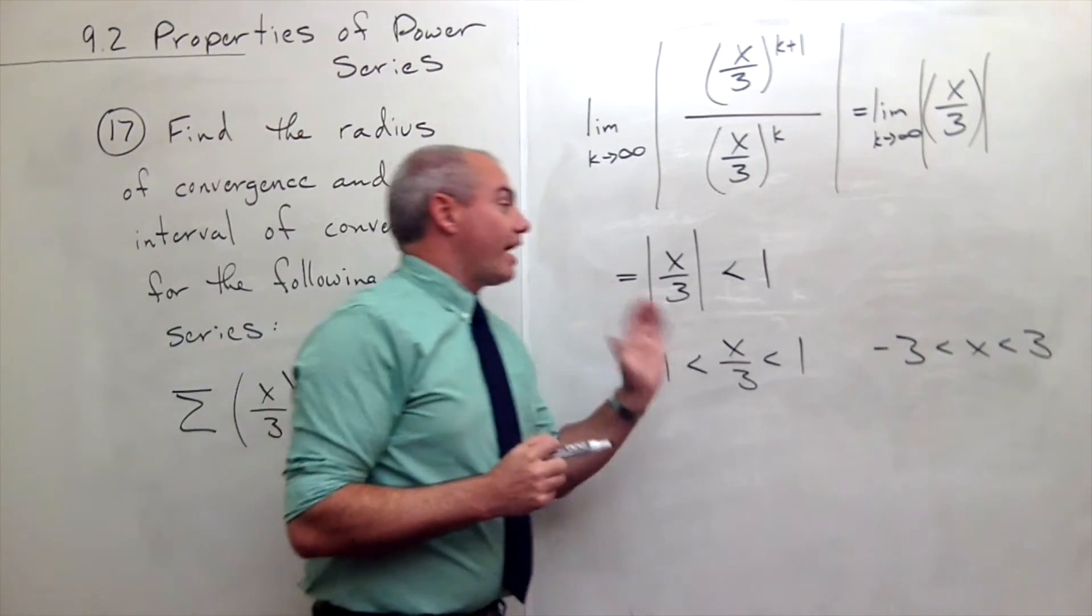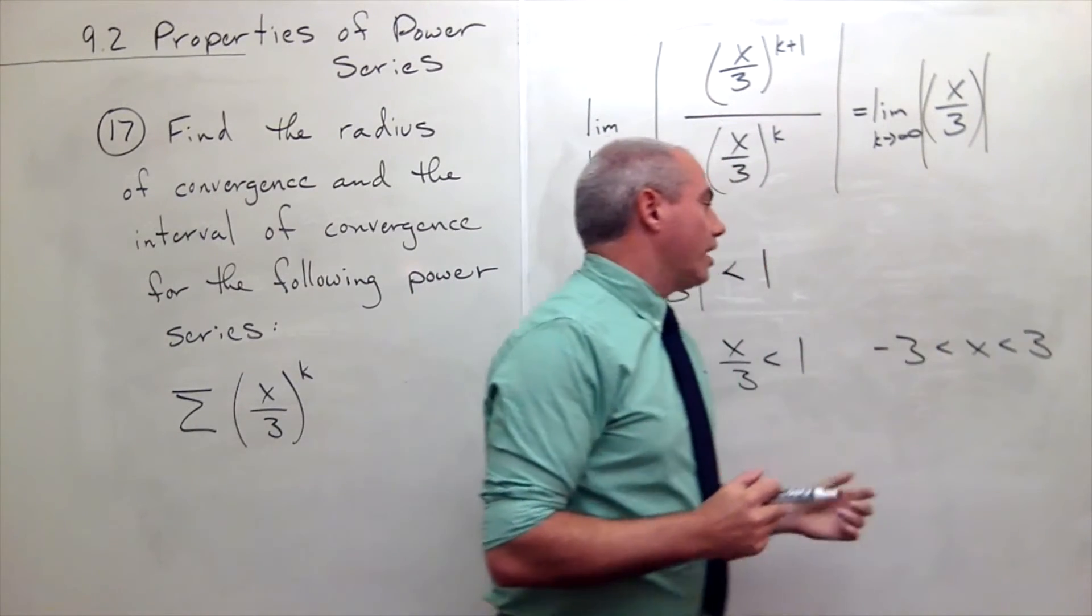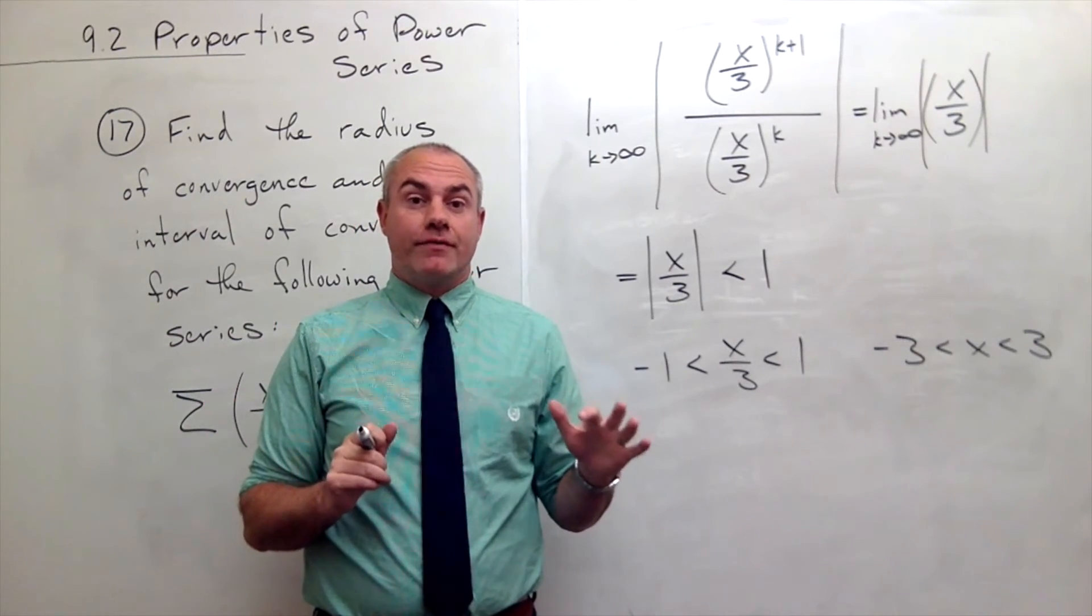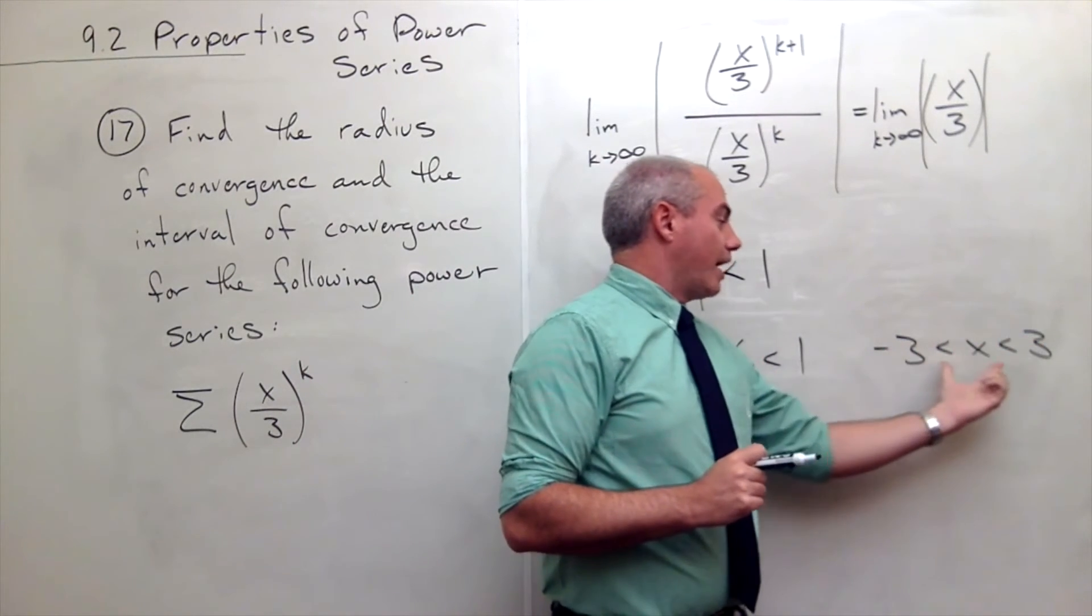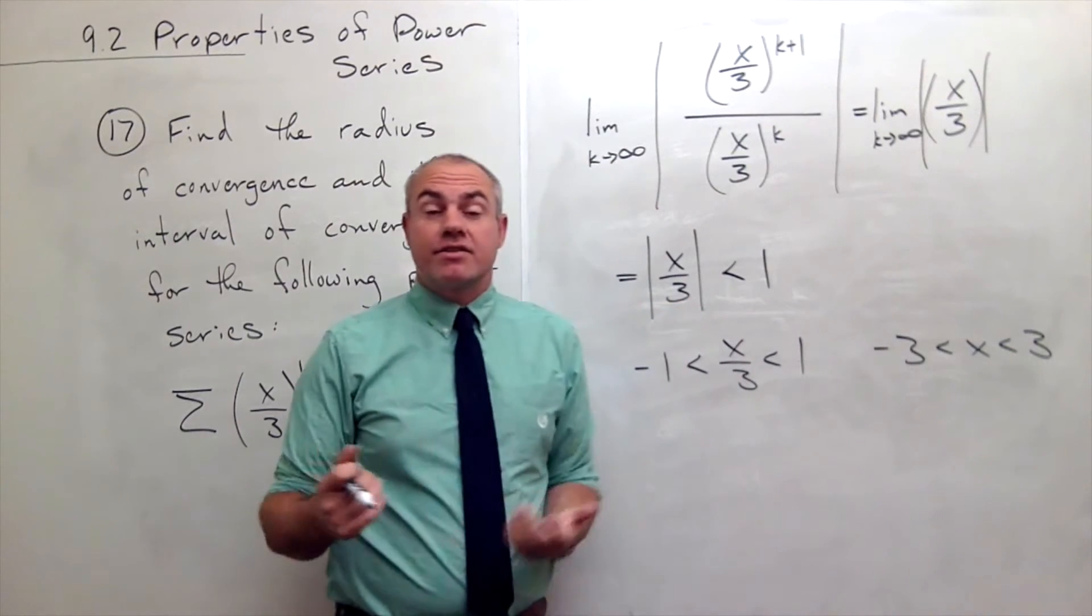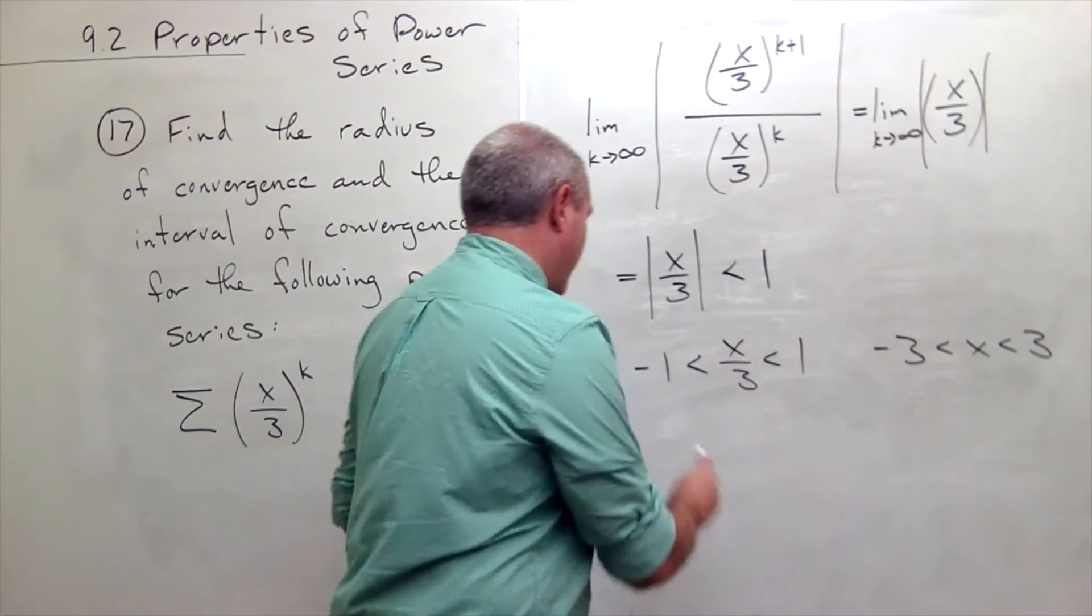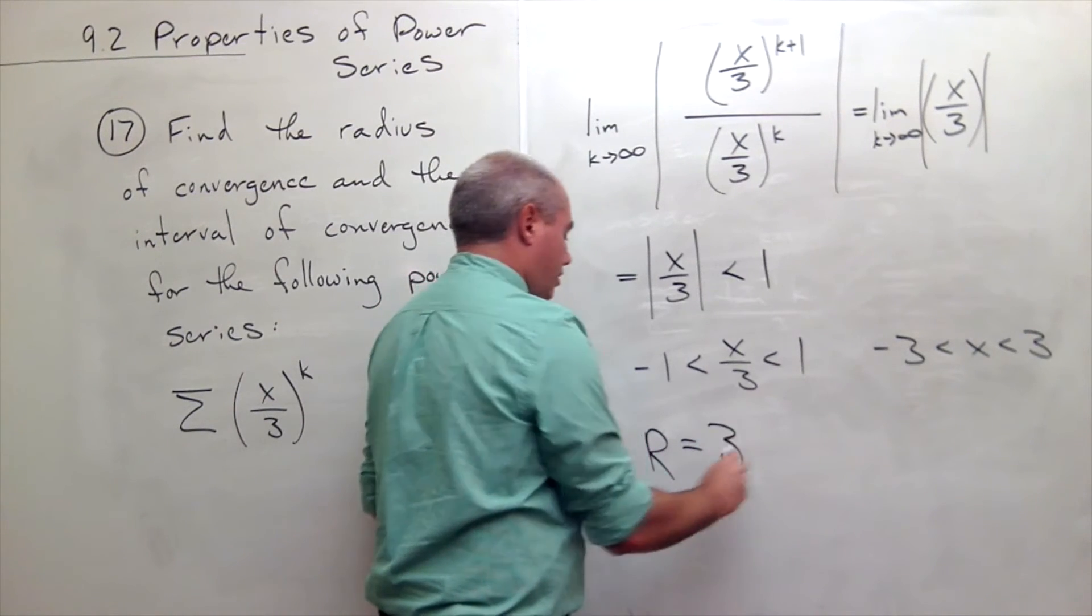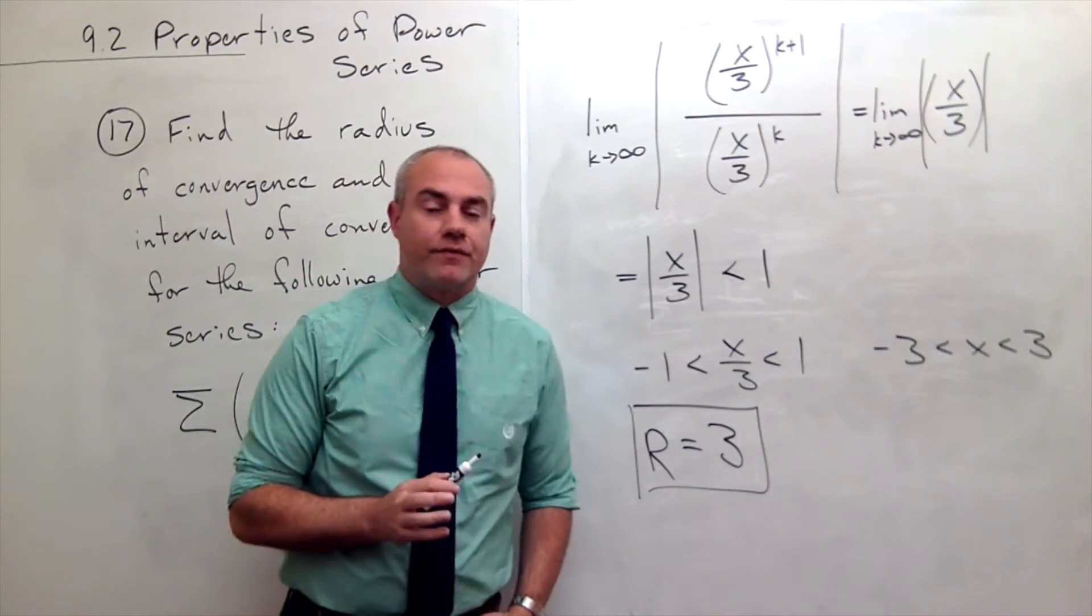And right off the bat, this gives me my radius of convergence. So we're not sure if 3 converges or -3 converges at this point, but I do know my radius of convergence. It is half of the distance of this interval, the interval 6, so my radius of convergence is 3. So if I'm looking for radius of convergence here, call that capital R typically, we're talking about 3.